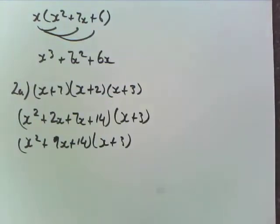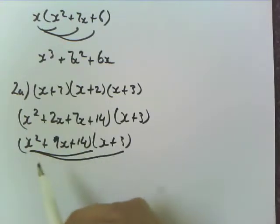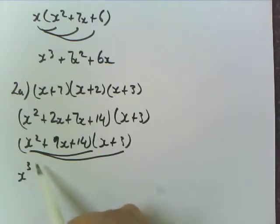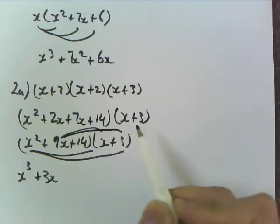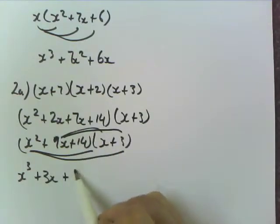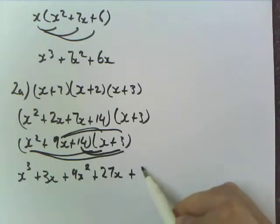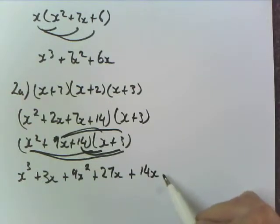And now you do FOIL again, but it's slightly different. You just multiply every term by the two terms in the other bracket. So we'll do x squared times x and x squared times 3. So x squared times x is x cubed, x squared times 3 is 3x squared. Then we'll do 9x times x and 9x times 3, 9x squared plus 27x. Then you do 14 times x and 14 times 3. So 14x and 14 threes are 42. Then you just go through and collect like terms and simplify them.